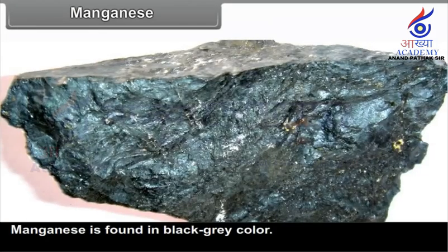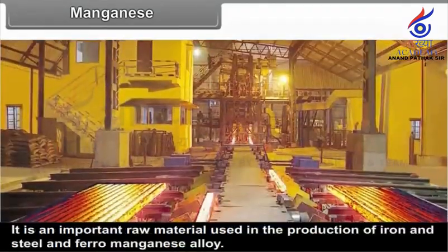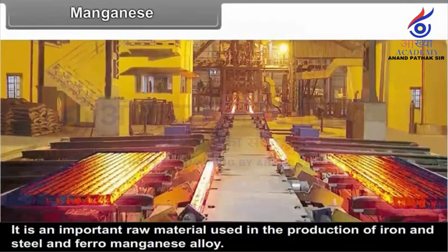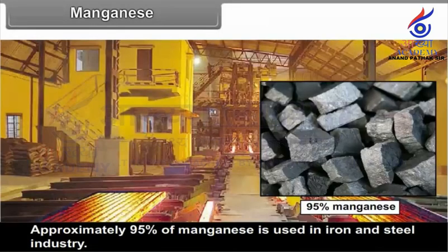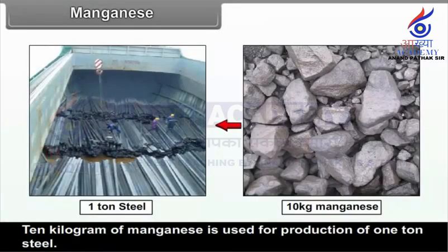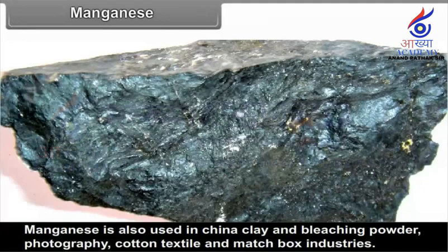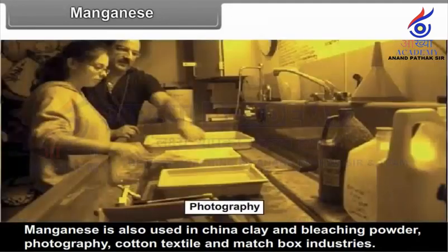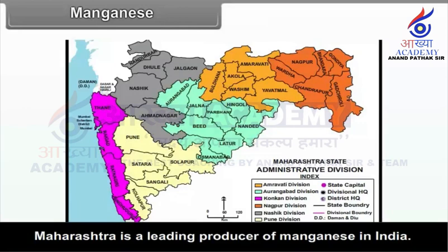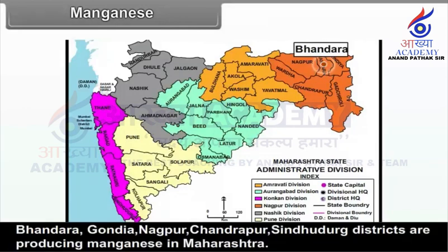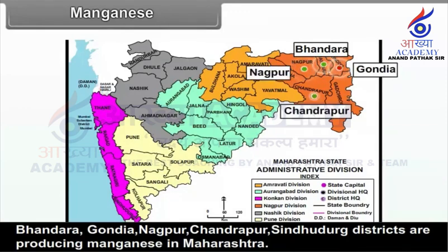Manganese. Manganese is found in black-gray color and is an important raw material used in the production of iron and steel and ferro-manganese alloy. Approximately 95% of manganese is used in the iron and steel industry; 10 kilograms of manganese is used for the production of 1 tonne of steel. Manganese is also used in china clay, bleaching powder, photography, cotton textile and matchbox industries. Maharashtra is a leading producer of manganese in India. Bhandara, Gondiya, Nagpur, Chandrapur, and Sindhudurg districts produce manganese in Maharashtra.